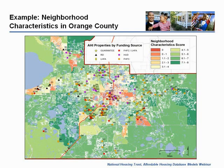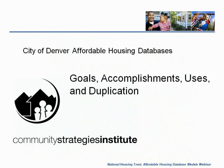We're going to move over to Tom and Jenny at the Community Strategies Institute while we're working out Vincent's technical problems. Jenny and Tom, I think you should have control now. Thanks, Tracy. Can you hear me? I can. I'm Jenny Rogers with the Community Strategies Institute and I'm on with Tom Hart, also of the Institute. And we're going to talk about four data sets that we created for the City of Denver.